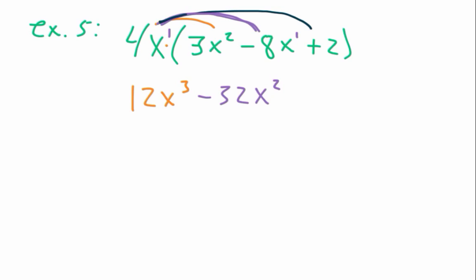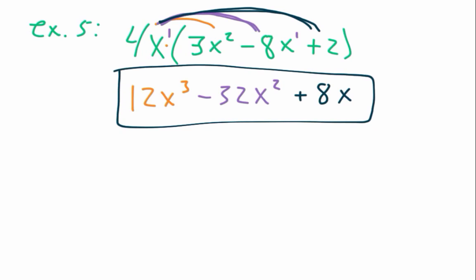You guys good so far? Okay, and then the last thing, we do the 4x times that last term, the plus 2, gives me positive 8x. Because I don't have an x after the 2, it's just positive 8x. Does that make sense? Because if it does, really, you kind of have the section mastered.